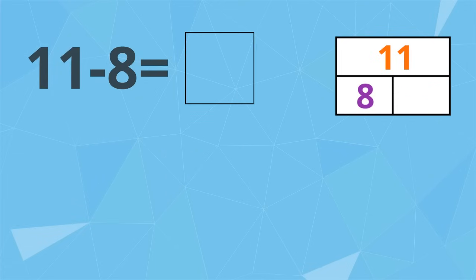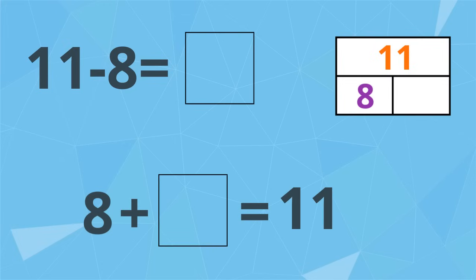Let's think about this as an addition problem. 8 plus something equals 11. 8 plus 3 equals 11. That means 11 take away 8 equals 3.